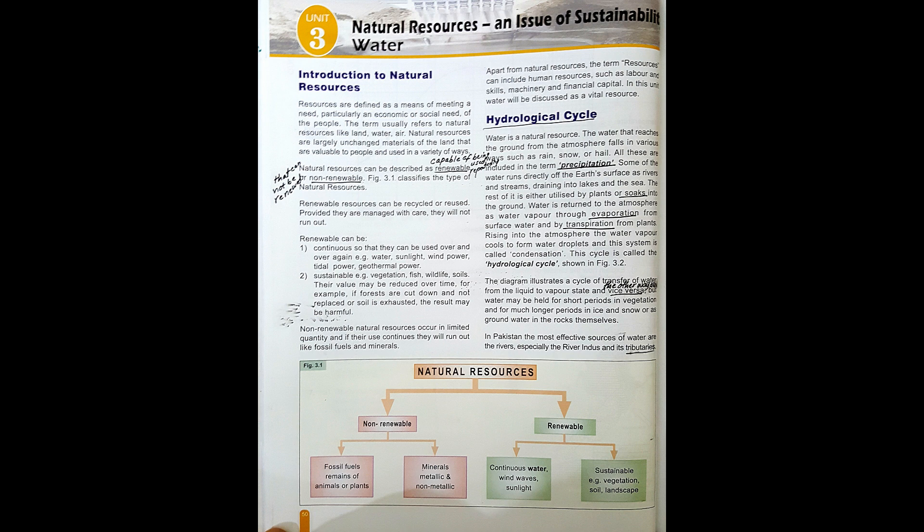The Hydrological Cycle — water is a natural resource. The water that reaches the ground from the atmosphere falls in various ways such as rain, snow or hail. All of these are included in the term precipitation. Precipitation is a term in meteorology that includes rain, snow, frost and hail. These form by condensation of atmospheric water vapor and fall under gravity.